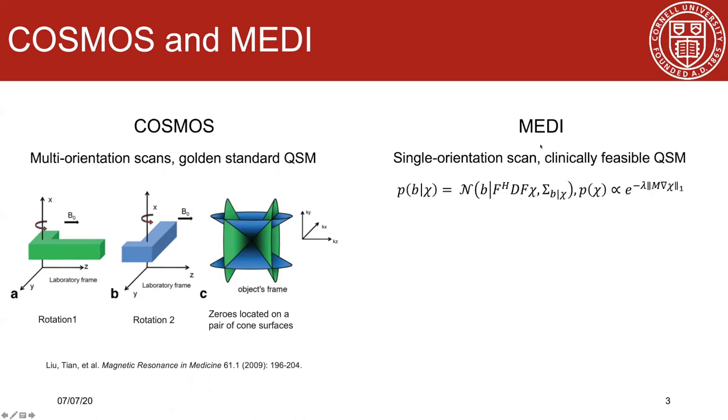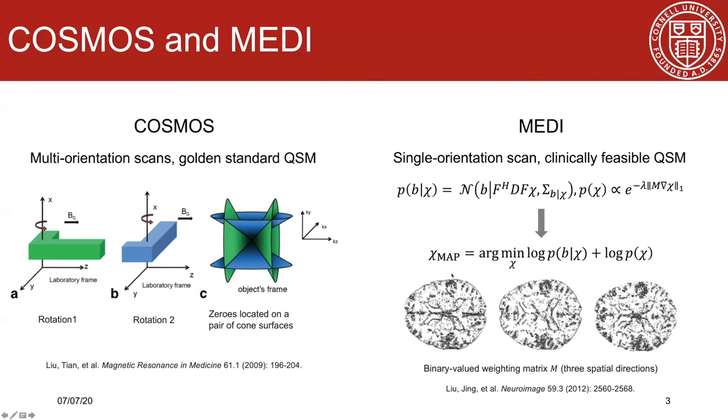Another method called MEDI was proposed to solve QSM inverse problem with single orientation scan. MEDI defines a morphology-related regularization term to regularize the inverse problem. This regularization term can also be regarded as the prior distribution of susceptibility under the maximum a posteriori framework. MEDI prior penalizes the gradient in three spatial directions outside the brain to suppress the image-based streaking artifact introduced by the dipole inversion.